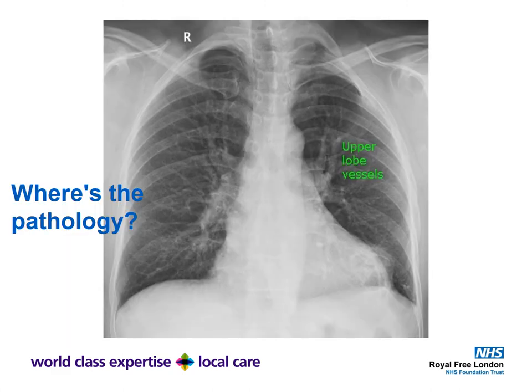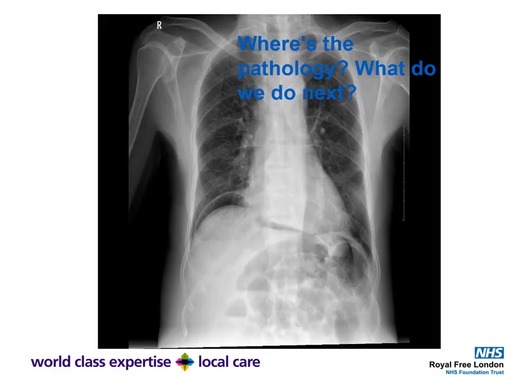Where's the pathology? The upper lobe vessels are quite prominent and the pulmonary vessels are bulky. It's important to appreciate that some apparent nodules on a chest X-ray are actually vessels coming toward you in that plane — the chest X-ray is one projection whereas the lungs work three-dimensionally. So where is the pathology and what do we need to do next?